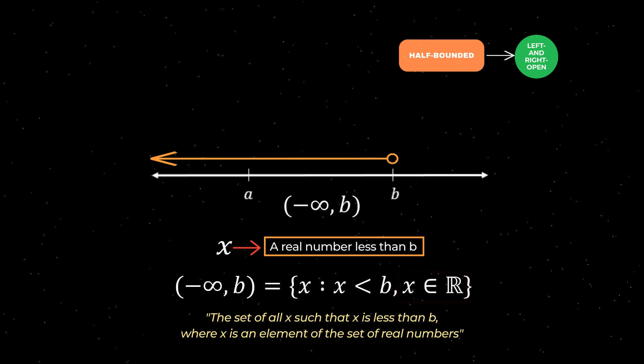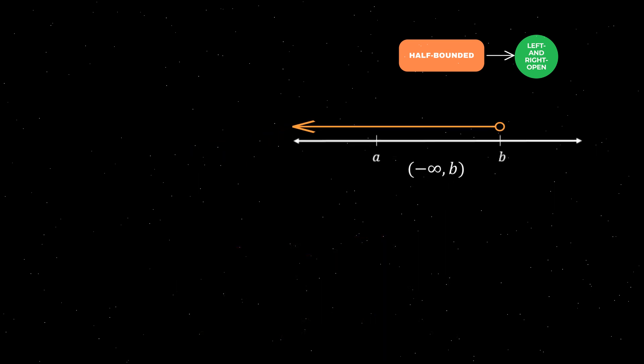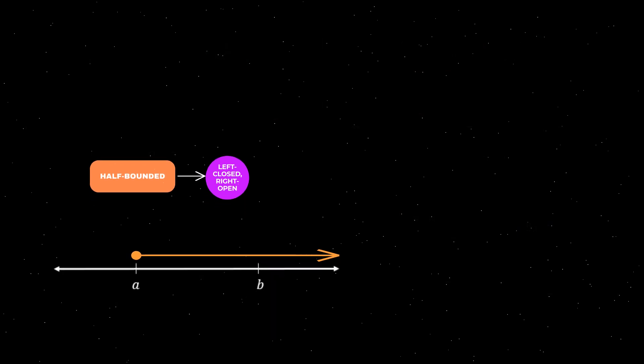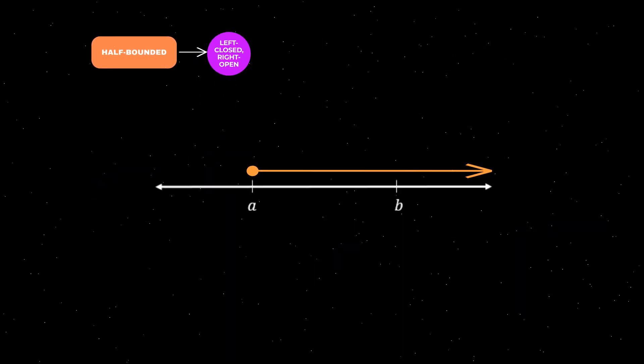Let's now look at a half bounded interval that is left closed right open. A general example of this type of interval is shown on the number line here. This interval is half bounded because it has one endpoint on one side — in this case the left endpoint A — and no endpoint on the other side, as indicated by the arrow. On the left, the interval is closed because the endpoint A is included, as indicated by the closed circle.